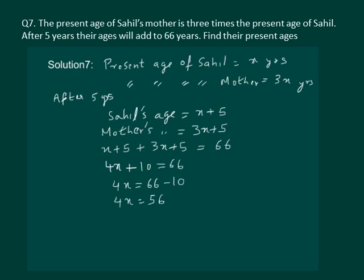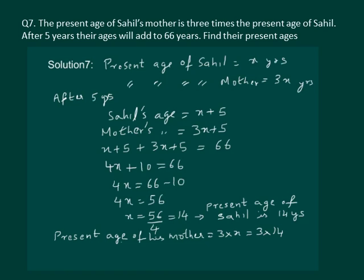It becomes 66 minus 10, which gives us 4x is equal to 56. On dividing both sides by 4, we get 56 by 4 which is equal to 14. So the present age of Sahil is 14 years. The present age of his mother is 3 into 14 which is equal to 42 years.